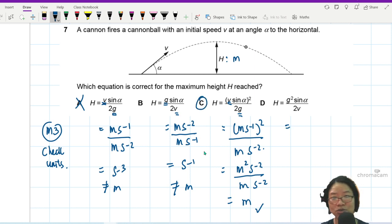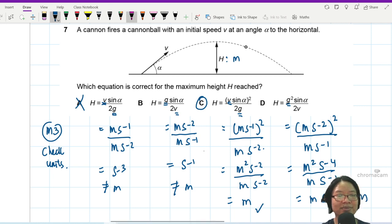But just in case, we will check this one also. This is MS^-2 square, because of G, divided by MS^-1. You can see here, the seconds cannot cancel out. This will be M^2 S^-4 divided by MS^-1. This is MS^-3, which is not equal to M. So this is wrong, wrong, wrong. This is correct. The answer is C.